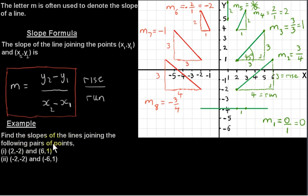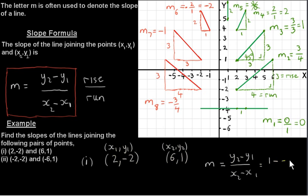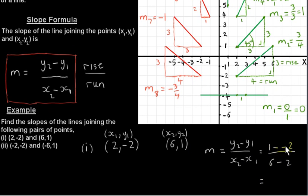Let's look at a few examples — we want to find the slopes of the lines joining the following pairs of points. First: (2, -2) and (6, 1). We write down these two points and label them. Our formula works for any two points X1, Y1 and X2, Y2. We write down the formula and plug in the values. Y2 is one, minus Y1 which is minus two, over X2 which is six, minus X1 which is two. One minus minus two means one plus two, which is three. Six minus two is four. We get three quarters.